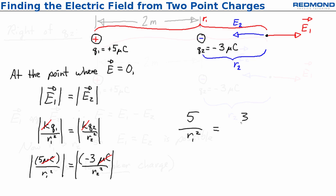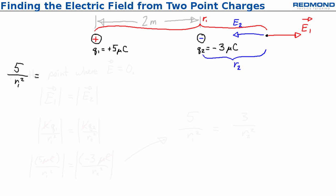This is nice and simple, but I still have two unknowns, R1 and R2, so I need another equation, which comes from the problem setup. The charges are two meters apart, so R1 is equal to R2 plus 2.